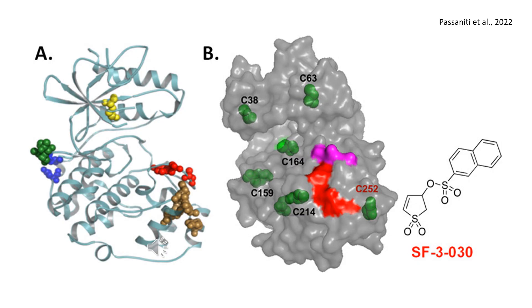The activation loop, shown in red, harbors the TXY motif, necessary for phosphorylation and ERK activation.